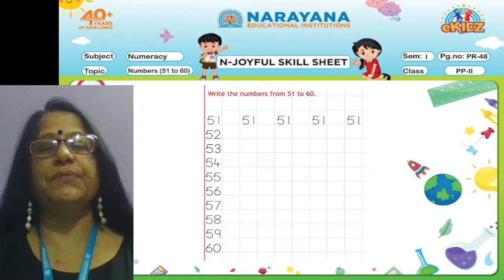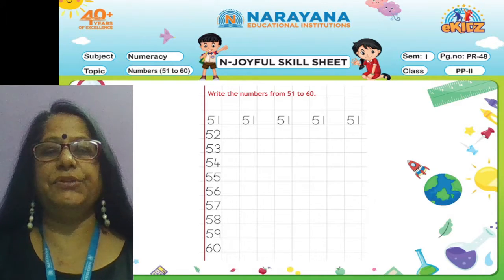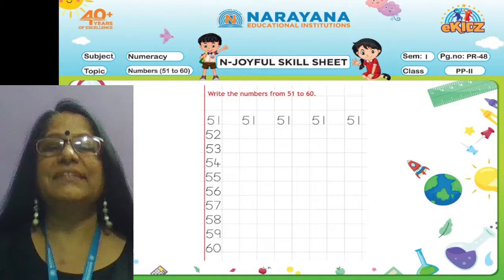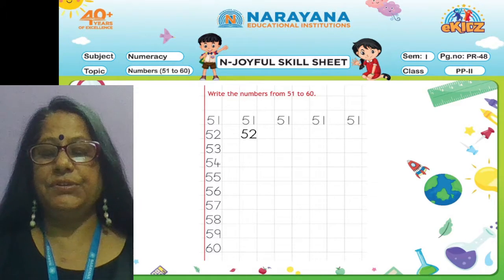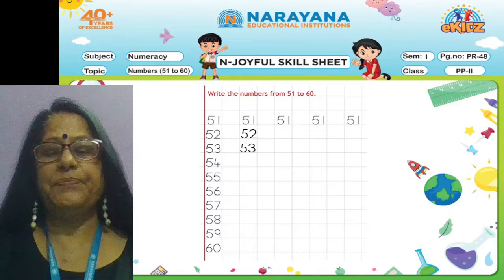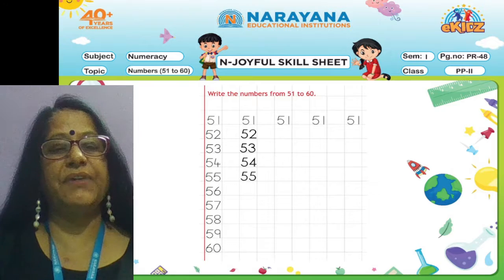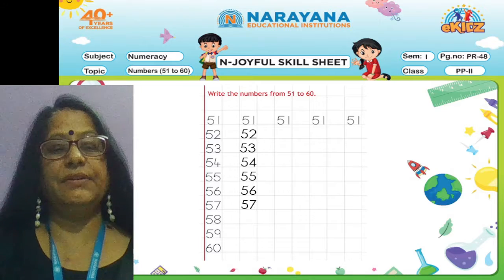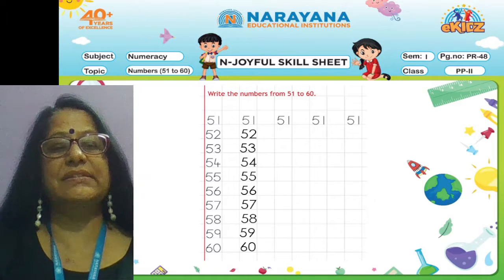Write the numbers from 51 to 60. See here, 51 is already written for you. Now we have to write the rest of the numbers. So let's start: 51, 52, 53, 54, 55, 56, 57, 58, 59, 60.